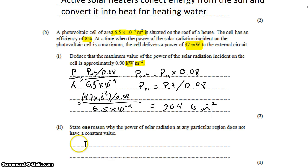Lastly, we want to state one reason why the power of solar radiation at any particular region does not have a constant value. Well, there's a couple of different reasons, but the short answer is that night happens.